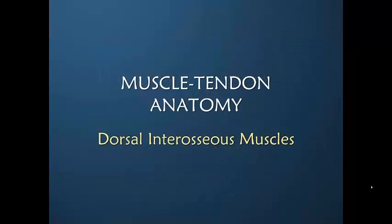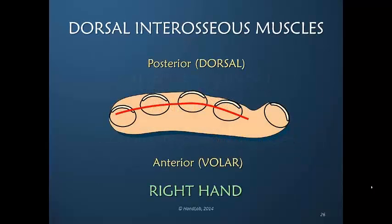Let's separate the dorsal and the volar interosseous muscles and focus on the dorsal interosseous muscles. We would assume they sit above the axis of the hand and the volar below. However,